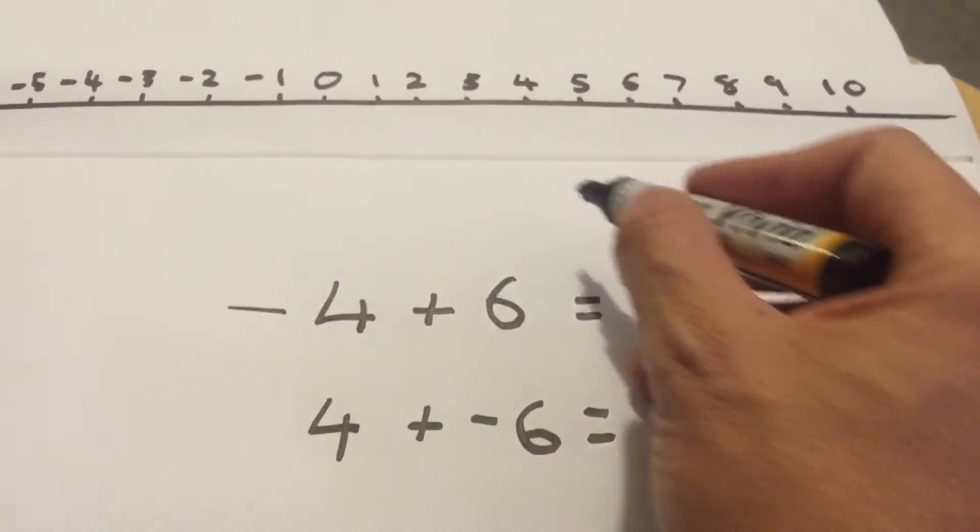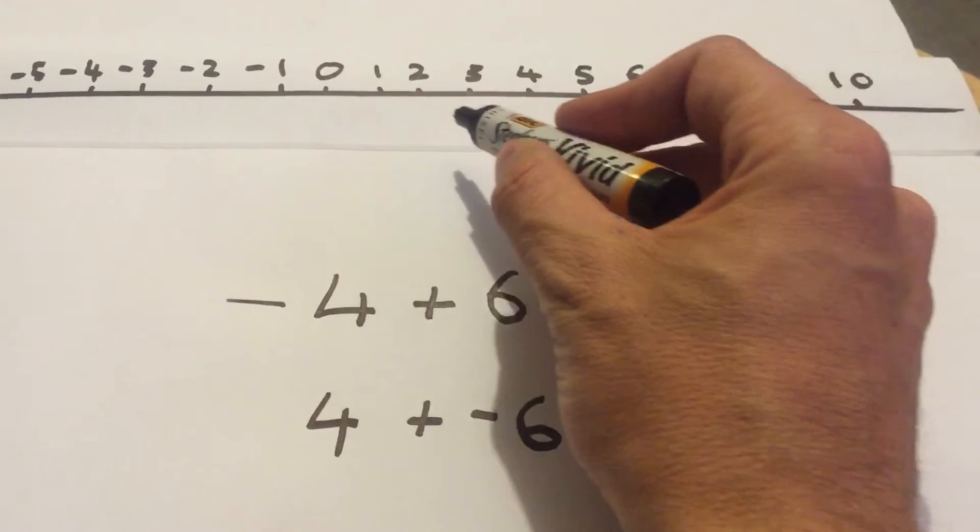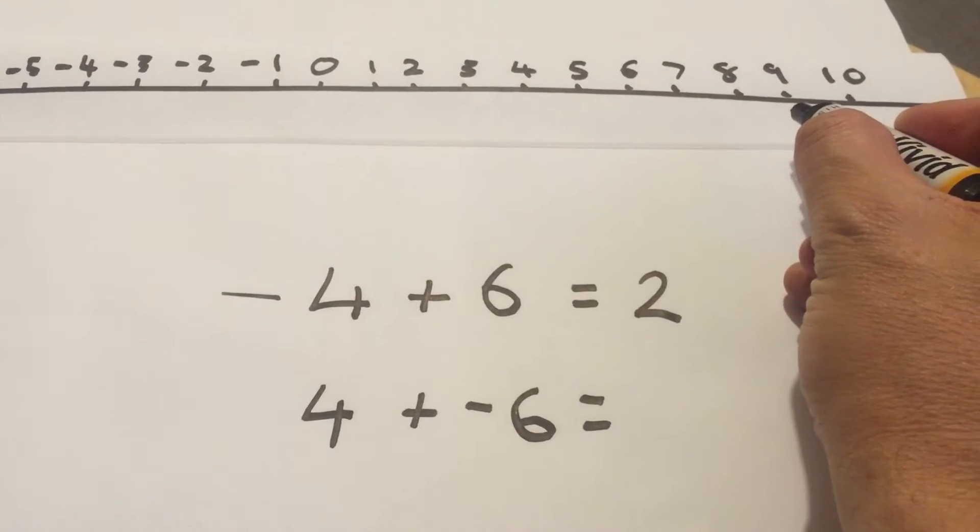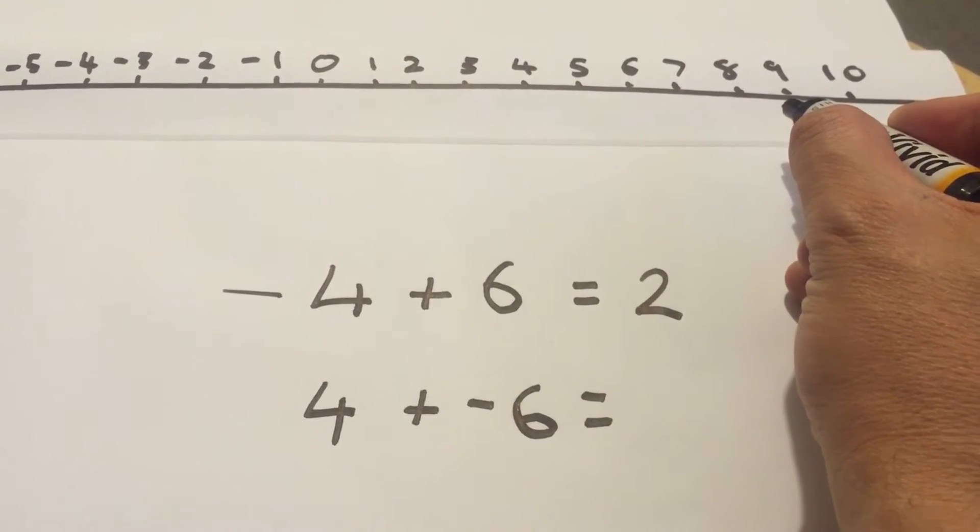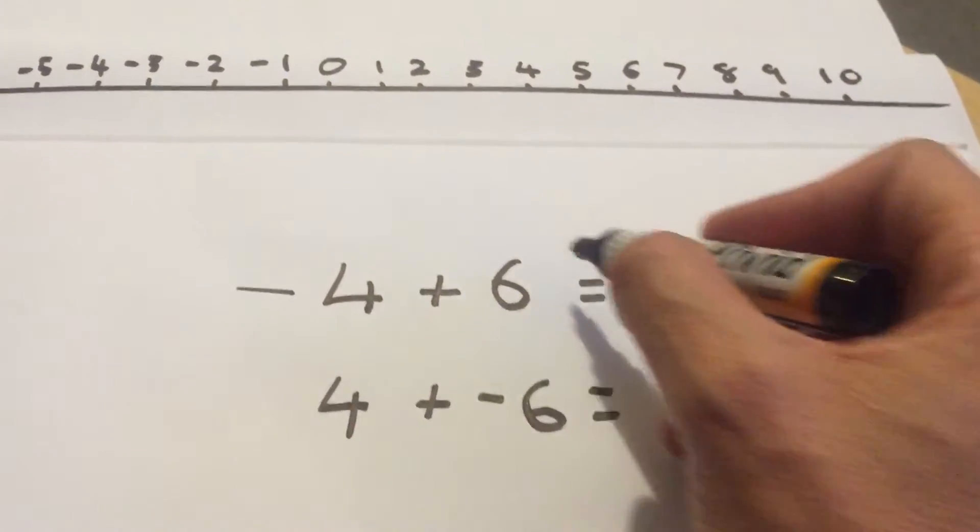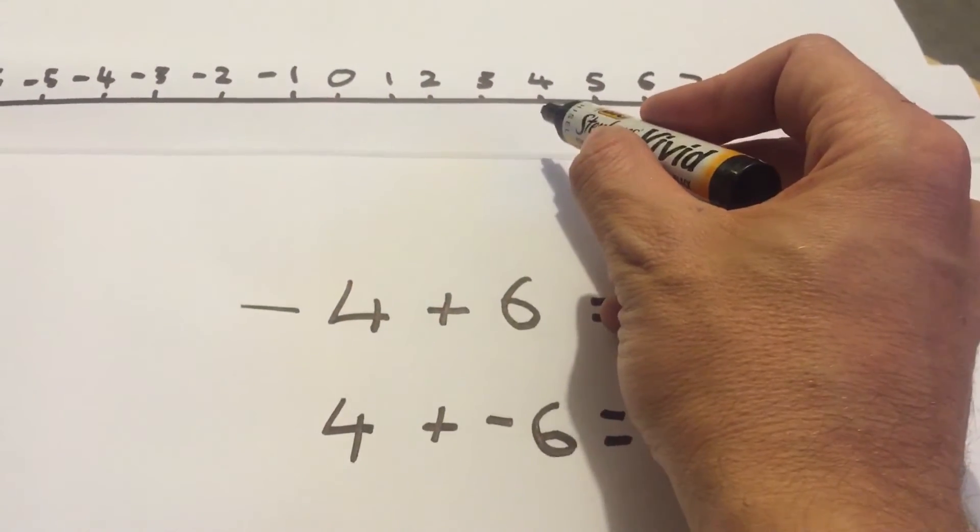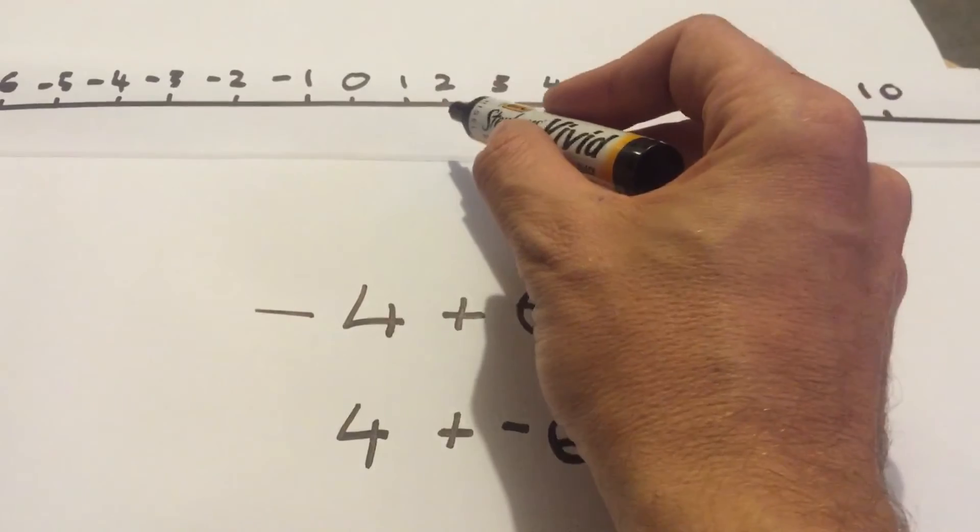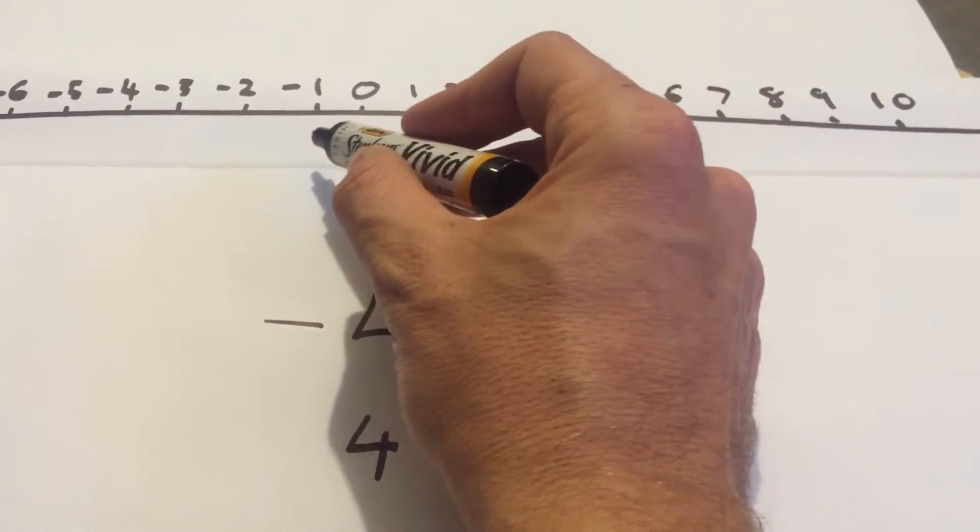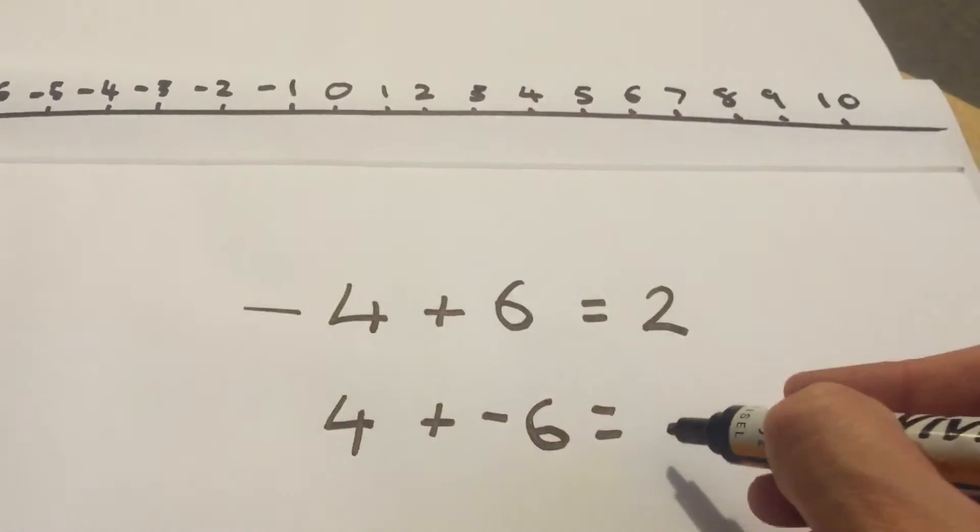But when you look at your number line, you can't go 6 that way because it's not positive 6. So the only possible other option is to go backwards. Okay, so there's 4 plus negative 6, let's do it. 1, 2, 3, 4, 5, 6 is negative 2.